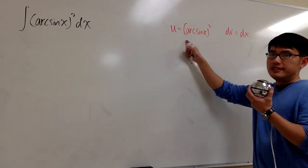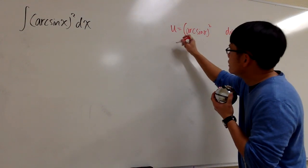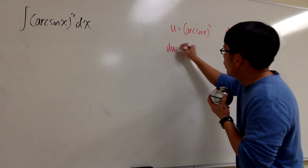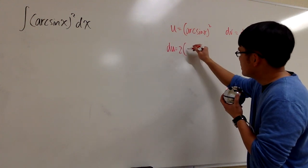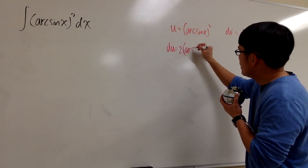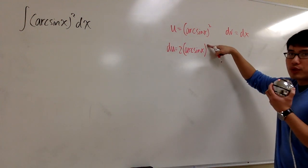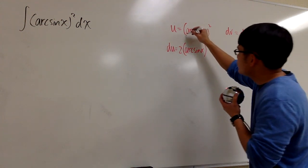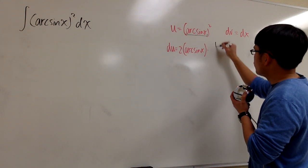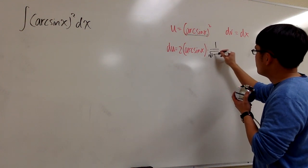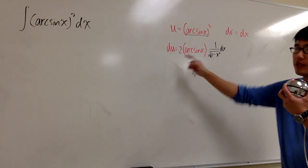It doesn't really matter how crazy this is, because we can always differentiate. For du, we differentiate: bring the two to the front, the inside stays the same — arc sine x to the first power after subtracting 1. Then the chain rule says we multiply by the derivative of arc sine x, which is 1 over square root of 1 minus x squared, and we put on dx for the differential.